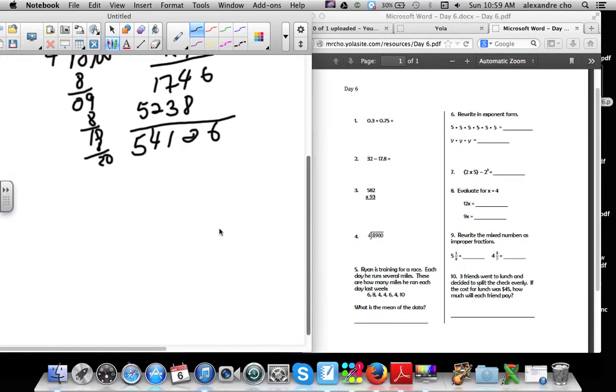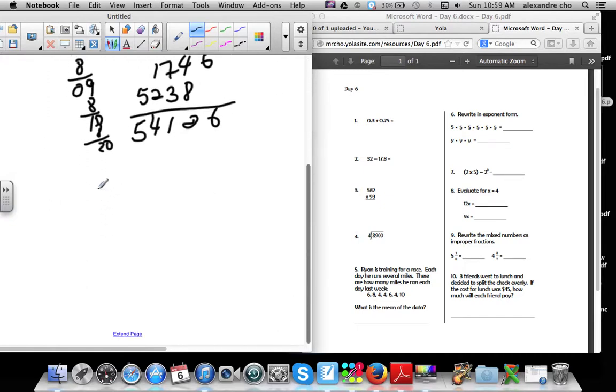Mean. I know it's not on your test, but those of you who actually did this: mean, median, and mode. So mean is all the numbers added up and then divided by however many numbers there are. So you got 6, 8, 4, 4, 6, 4, 10. You get 10, 20, 36, 42. And how many numbers do you have? You got 1, 2, 3, 4, 5, 6, 7. Divided by 7, the mean is 6.